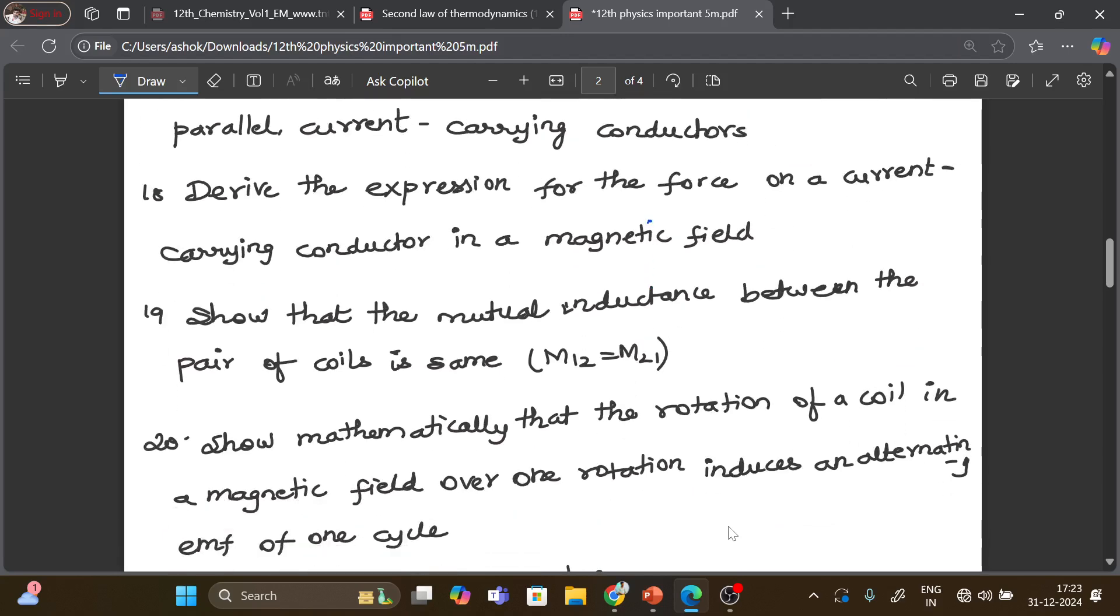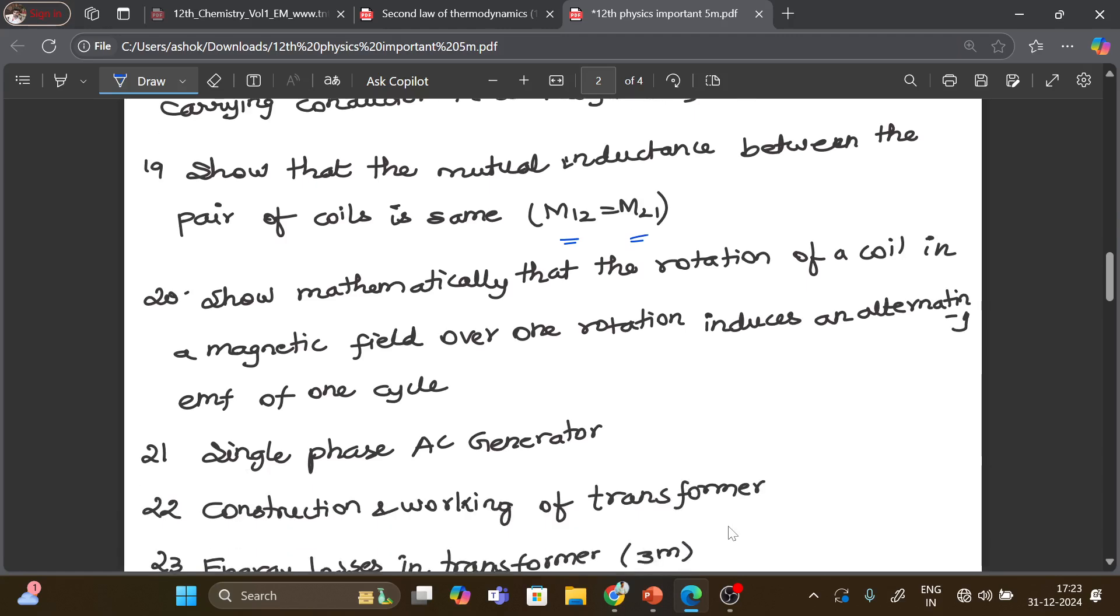Let's check the question. Show that the mutual inductance between the pair of coils is same, M21 is equal to M12, you have to prove. Then show mathematically that the rotation of a coil in a magnetic field over one rotation induces an alternating EMF of one cycle. This is a very important question with graph.